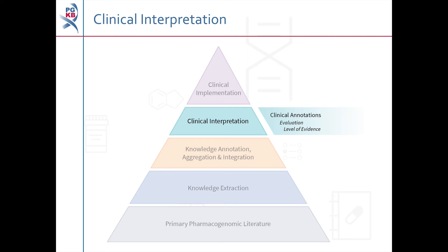Each clinical annotation is given a level of evidence depending on specific criteria, including study size and the statistical significance of the association. A link to our evidence criteria is given in the description below this video. Clinical annotations can be moved up or down the evidence scale as new information becomes available.